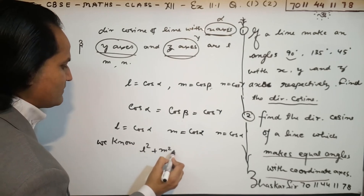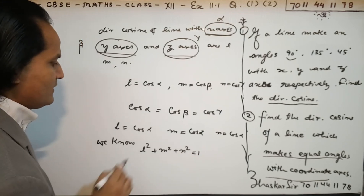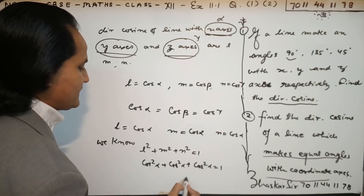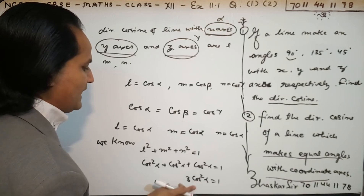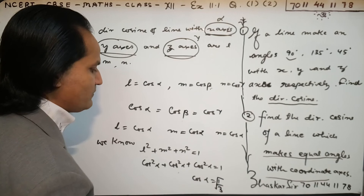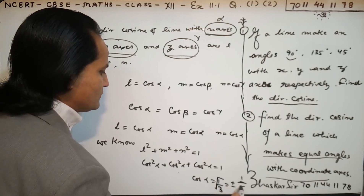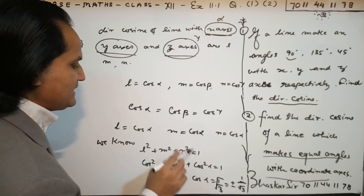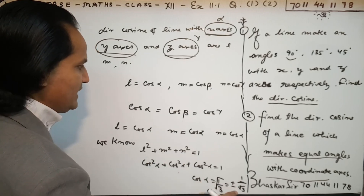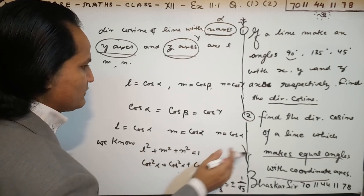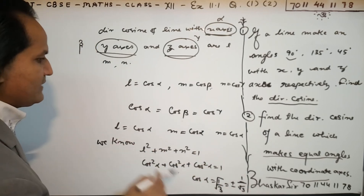We know that L squared plus M squared plus N squared equals 1. So cos squared alpha plus cos squared alpha plus cos squared alpha equals 1. That gives 3 cos squared alpha equals 1, so cos squared alpha equals 1 upon 3, and cos alpha equals plus or minus 1 upon root 3. Therefore the direction cosines are: L equals plus or minus 1 upon root 3, M equals plus or minus 1 upon root 3, and N equals plus or minus 1 upon root 3.